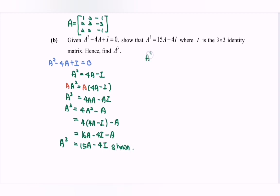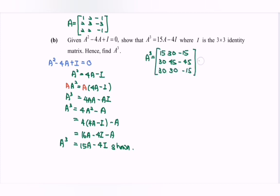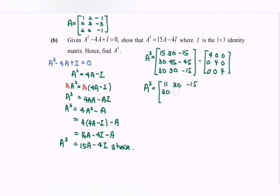Next is to find the numerical value of A cubed. We compute 15A, which gives the matrix with entries 15, 30, negative 15, 30, 45, negative 45, 30, 30, negative 15. Minus 4I, which is 4, 0, 0, 0, 4, 0, 0, 0, 4. So A cubed equals the matrix 11, 30, negative 15, 30, 41, negative 45, 30, 30, negative 19.